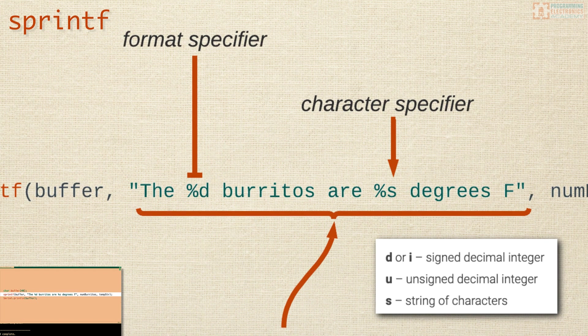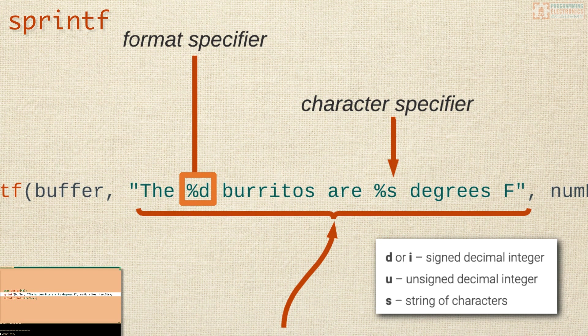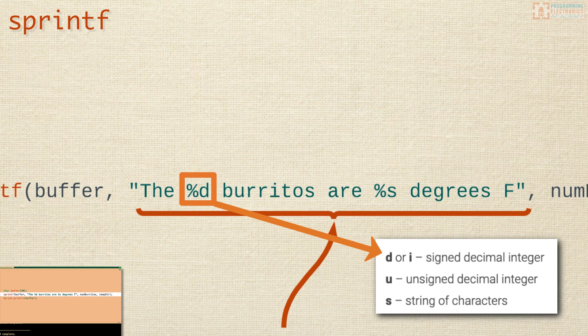So here, when we see this percent sign d, we are telling sprintf to format the inserted variable as a signed decimal integer.